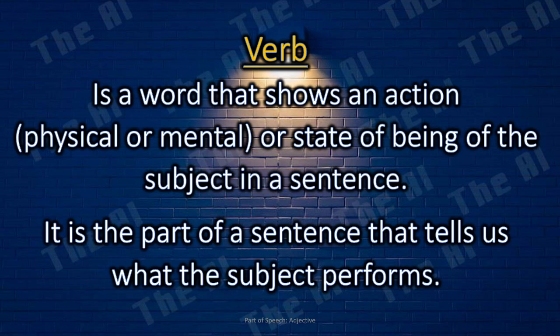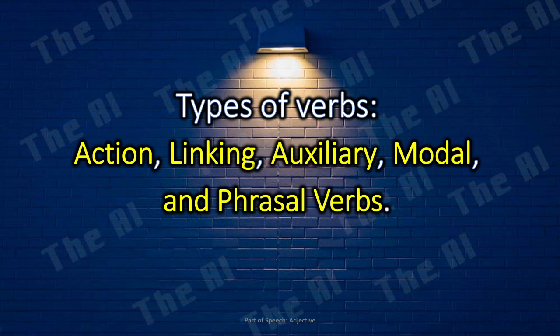Verb. The verb is a word that shows an action, physical or mental, or state of being of the subject in a sentence. It is the part of a sentence that tells us what the subject performs. Here are the different types of verbs in English grammar. They are action, linking, auxiliary, modal, and phrasal verbs.